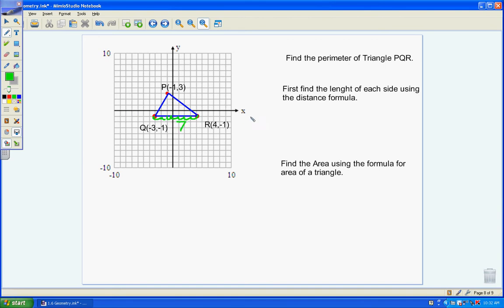To find the length of the other side, we have to use the distance formula. The distance formula is square root of (x2 minus x1) squared plus (y2 minus y1) squared.